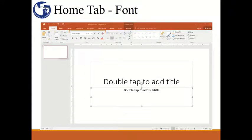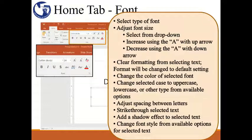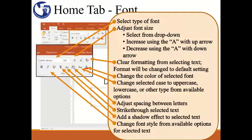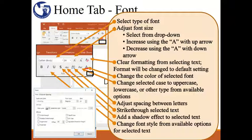We will move on to the next group of commands. The font command group offers different ways to format the text in your presentation. To change the type of font, you can select from the available options in the drop-down menu. There are a couple of ways to adjust the size of your font: you can either select a specific font size from the drop-down menu, or increase or decrease the font size using the A icons with the up or down arrow. The A icon with the eraser will clear any formatting of selected text. You'll notice that there is an arrow at the corner of this group — clicking on it will open up a box that includes all the commands on this list plus a few additional options.